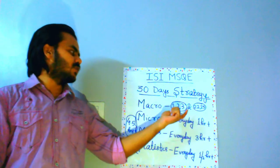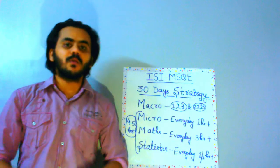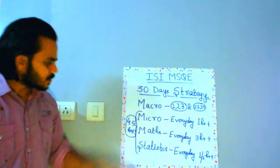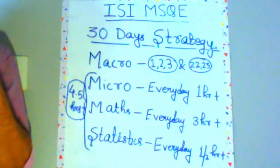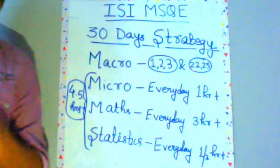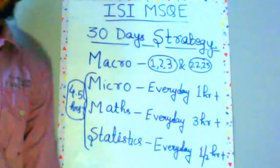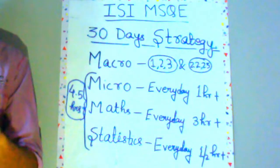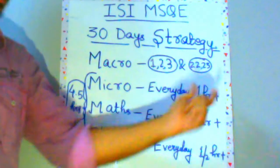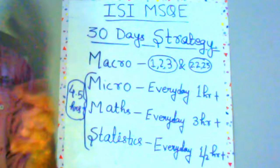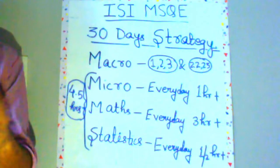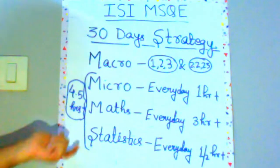You need to give macroeconomics a chance but not let preparation circle around it, so give it time when you're fresh and when you've wound up your preparation — in the beginning and in the end. After that, micro, maths, and statistics must be given importance every day. Ideally give most of your time to maths — at least 3 hours daily. For microeconomics, around 1 hour every day, and for statistics around 30 minutes. This is the bare minimum: 4.5 hours daily.